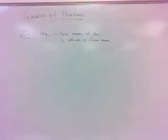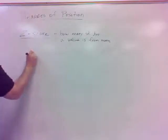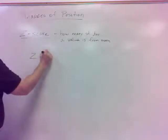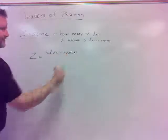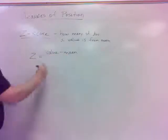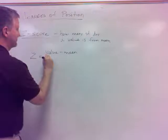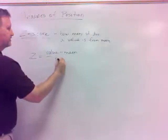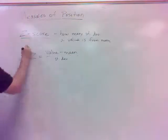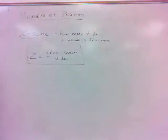Let me give you the formula. The z-score formula: z equals the value minus the mean divided by the standard deviation. That's the z-score formula.